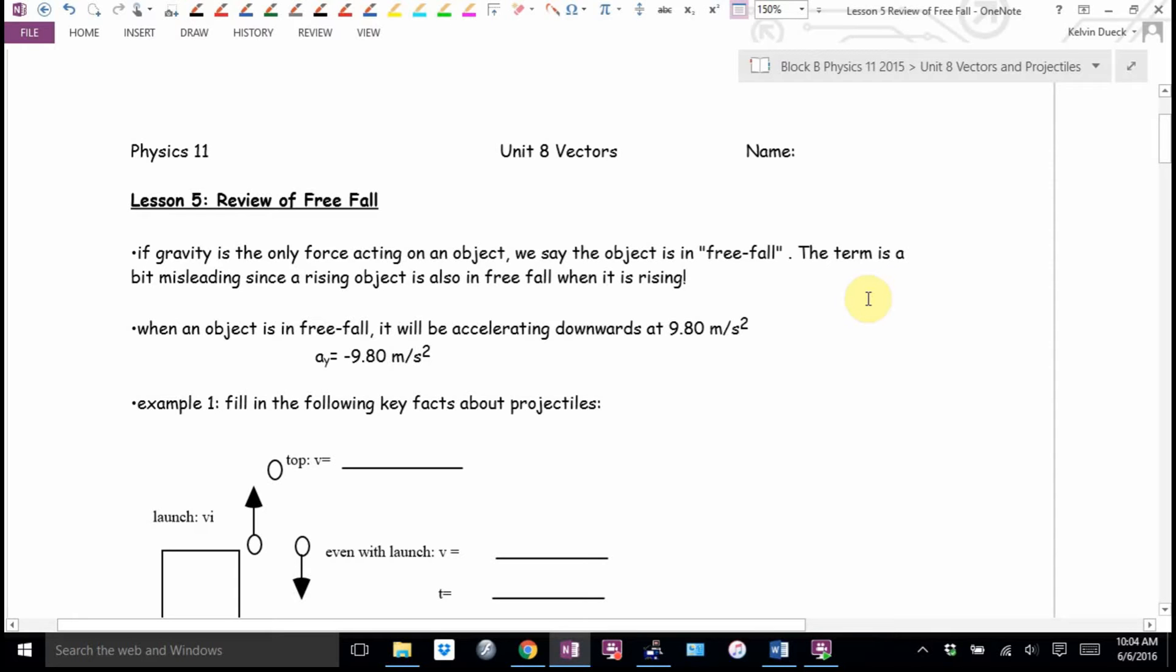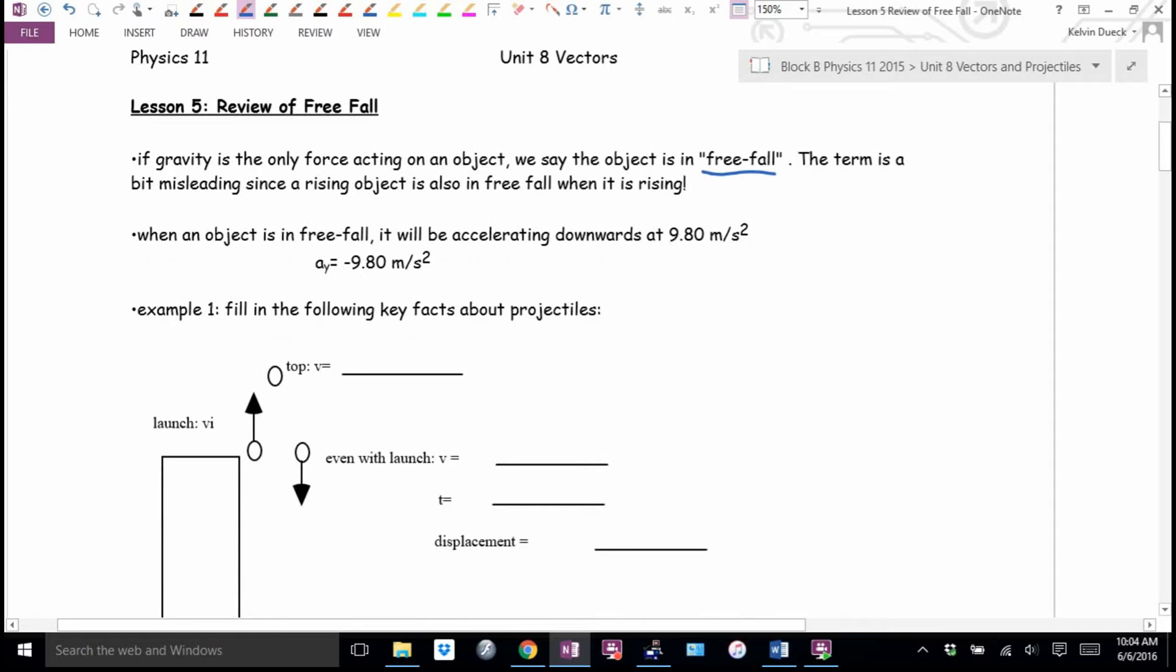If gravity is the only force acting on an object, we say the object is in free fall. This term is a little misleading because we say free fall, but on the way up, if you're rising, you're still in free fall because gravity is still the only force acting on you. The acceleration is still down. Your velocity just happens to be up, but you're slowing down.